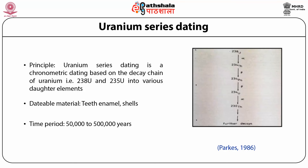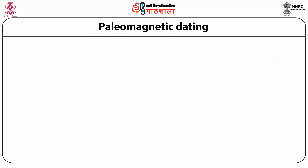The dateable materials for uranium series are chemically or biologically precipitated calcium carbonate (CaCO3), and it is also applicable to date teeth and bones based on the principle of accumulating uranium from groundwater after burial.